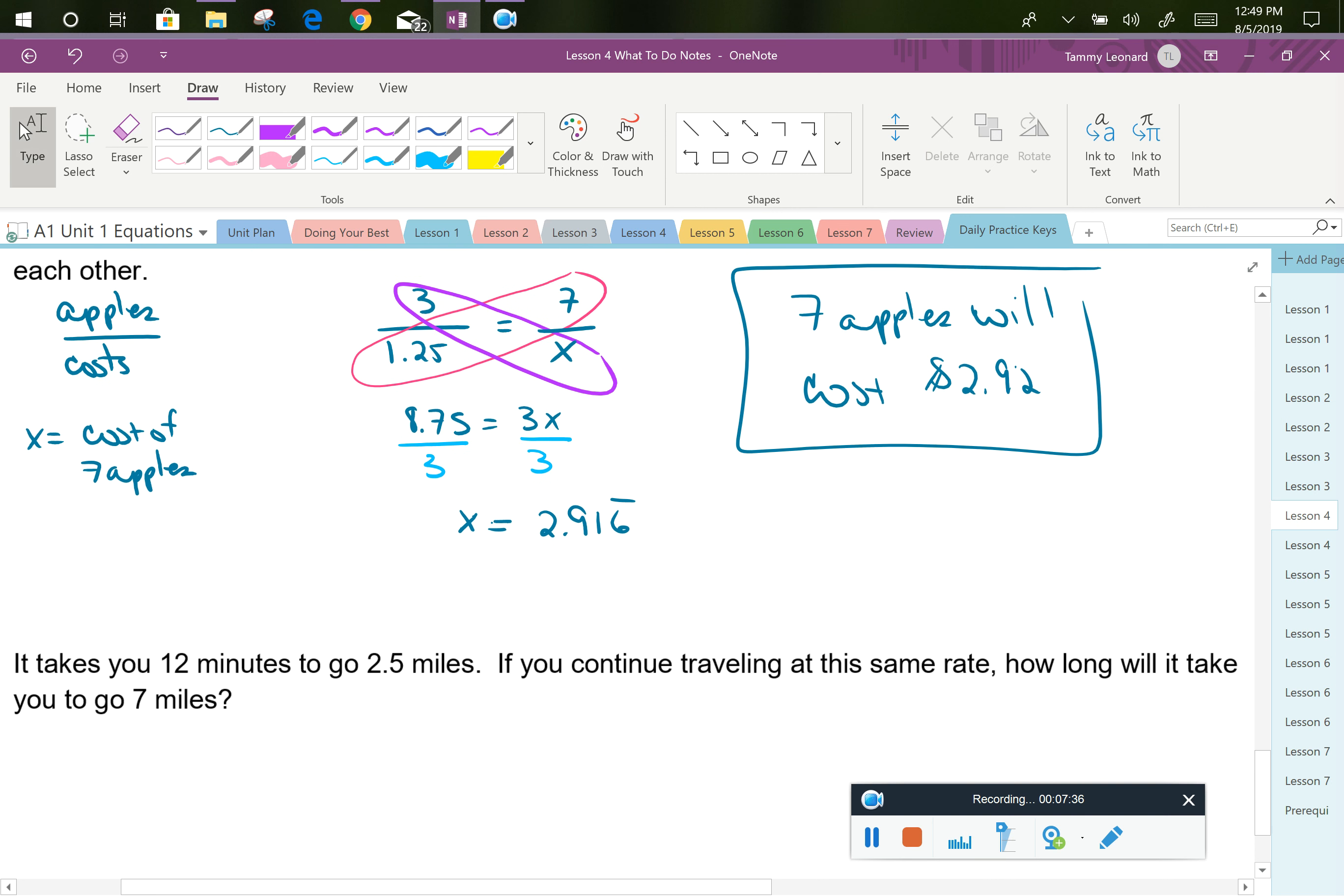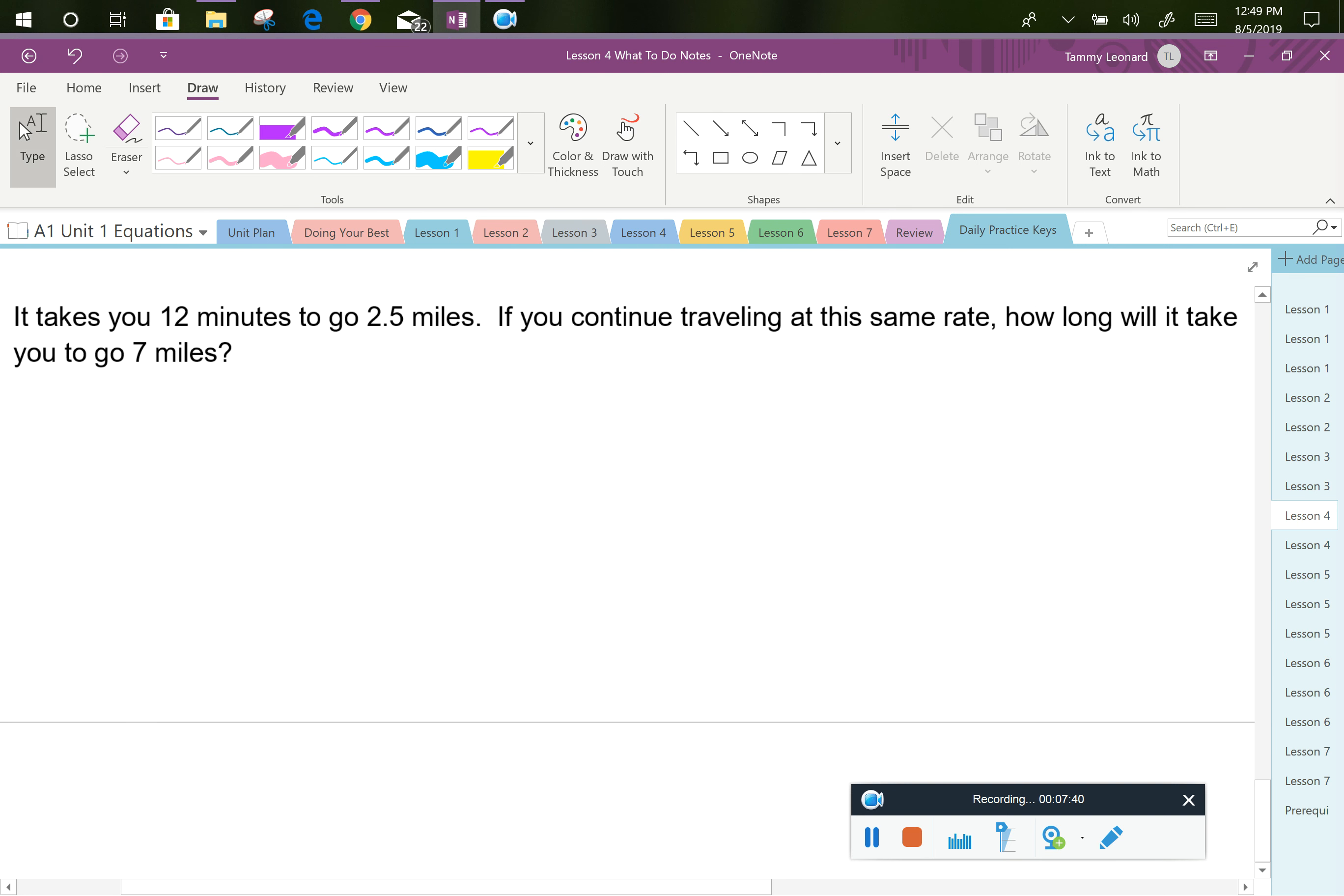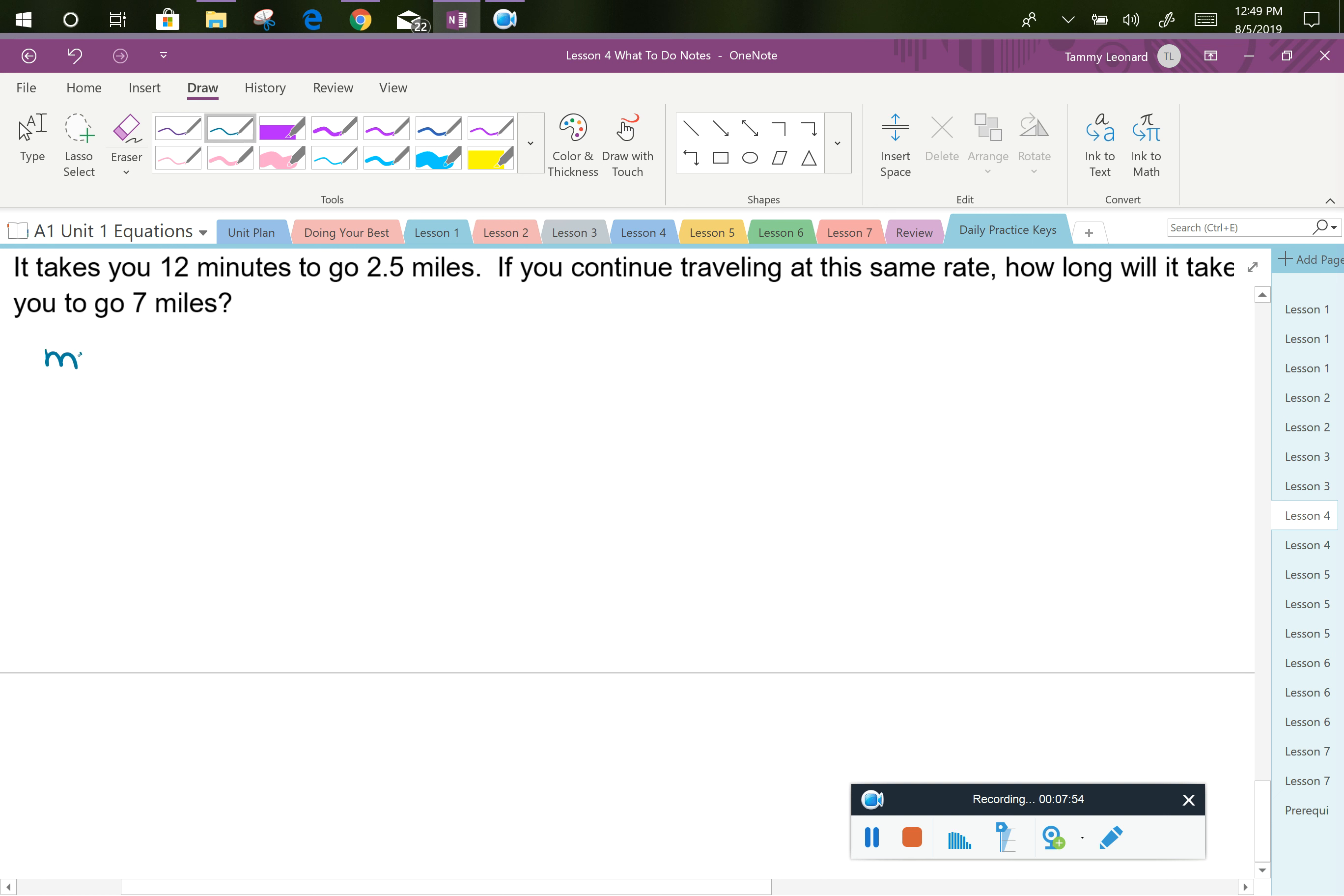Following similar thinking, let's look at the second word problem. It says it takes you 12 minutes to go 2.5 miles. If you continue traveling at the same rate, how long will it take you to go 7 miles? So if we think of what we want our ratio to be, I see 2 units in the first sentence. I see minutes over miles. So I'm going to be consistent and set both of my fractions up with minutes over miles. The question is asking me how long. Well, so if my unit of time is minutes, that means in how many minutes. So I'm going to say let m equal the number of minutes to go 7 miles. So minutes over miles for the known situation is 12 minutes for 2.5 miles.